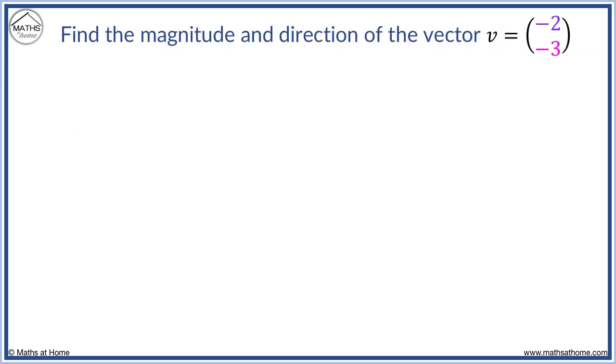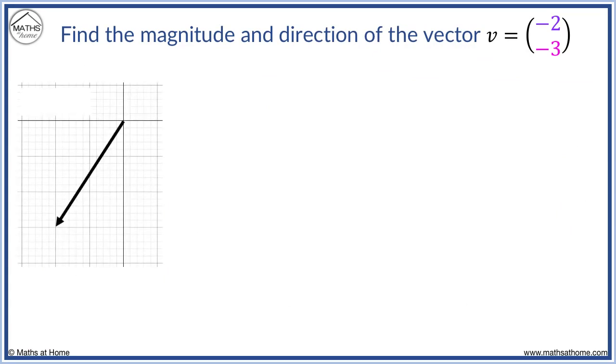Find the magnitude and direction of (-2, -3). The vector is shown with x component -2 and y component -3.